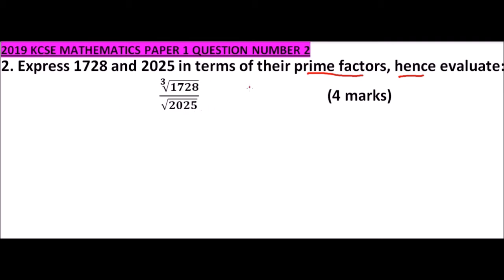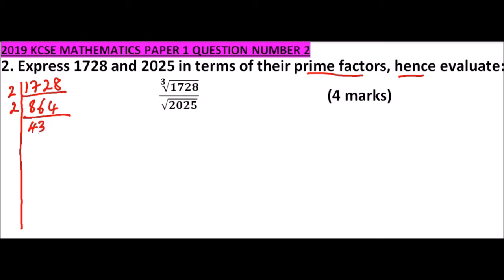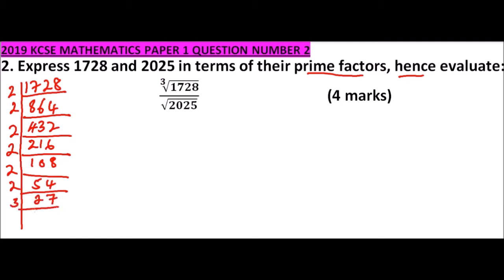Let's start by getting the factors of 1728 using division. Starting with 2: 1728 ÷ 2 = 864, ÷ 2 = 432, ÷ 2 = 216, ÷ 2 = 108, ÷ 2 = 54, ÷ 2 = 27, ÷ 3 = 9, ÷ 3 = 3, ÷ 3 = 1.